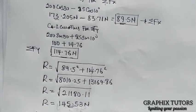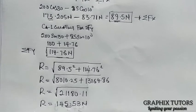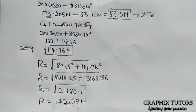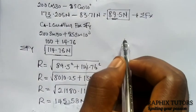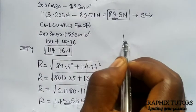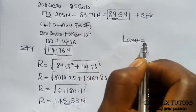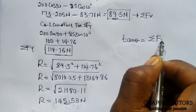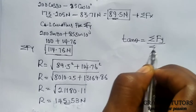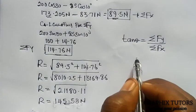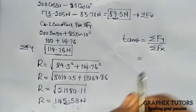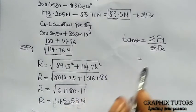Now we also need the angle the resultant force is acting at. You recall that my tan theta is equals to the summation of F of y over the summation of F of x.